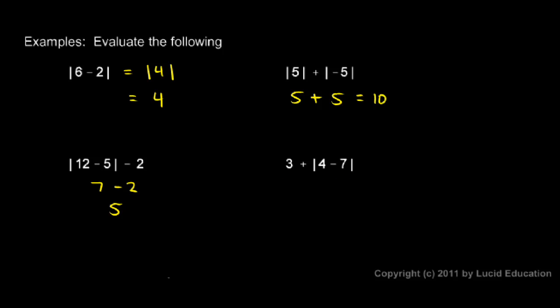In this example, I have 3 plus 4 minus 7. Now don't just do the 3 plus 4 left to right, because we have to do what's inside the absolute value sign first. Remember, the absolute value signs act as a grouping symbol. So I have to write this as 3 plus whatever this is. And 4 minus 7 is negative 3, so I have 3 plus the absolute value of negative 3. And that's equal to 3 plus 3. I've replaced the absolute value of negative 3 with 3, and then 3 plus 3 is equal to 6.